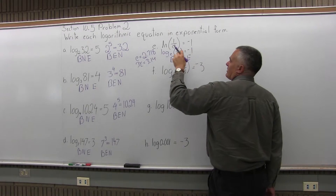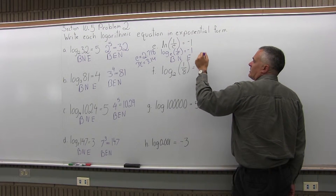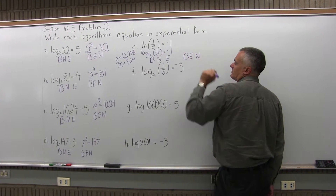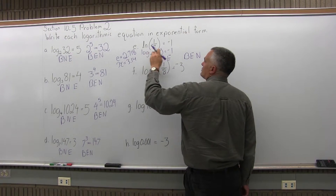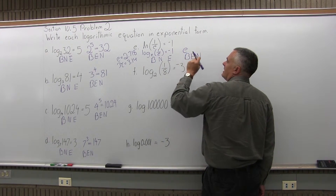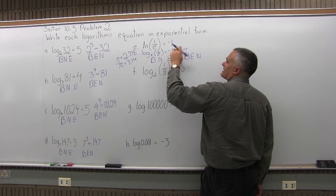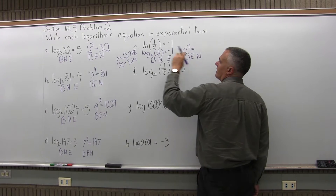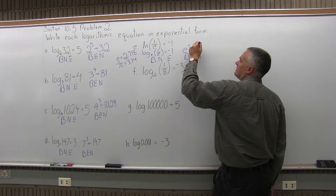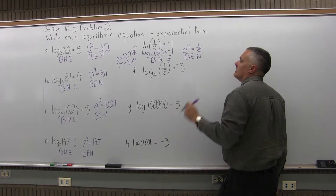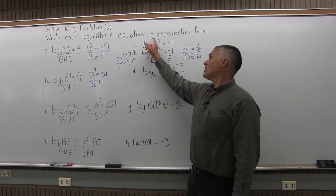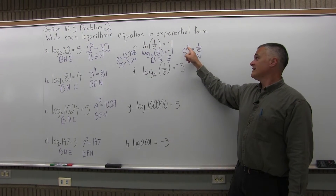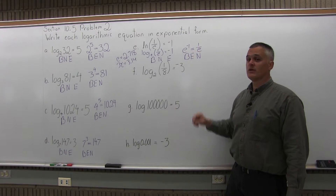I'm going to change BNE from the log form to BEN for the exponential form. The base was e, then the exponent — which was negative 1 — then equals, and then the number, which is 1 over e. So the natural log of 1 over e equals negative 1 can be written in exponential form as e to the negative 1 power equals 1 over e.